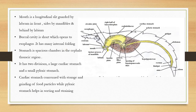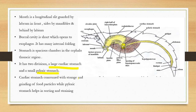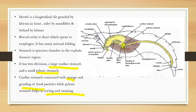The stomach is a spacious chamber present in the cephalic region. It has two divisions: the large cardiac stomach and the small pyloric stomach. The cardiac stomach is concerned with the storage and grinding of food particles, while the pyloric stomach is concerned with the sorting and straining of food.